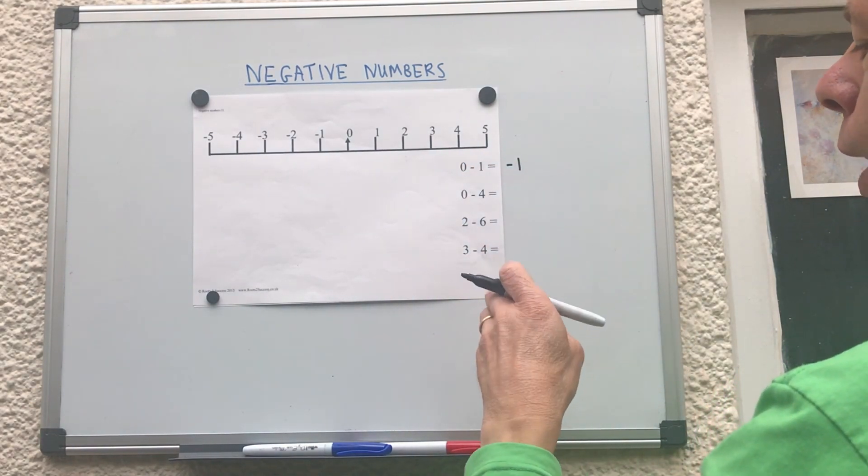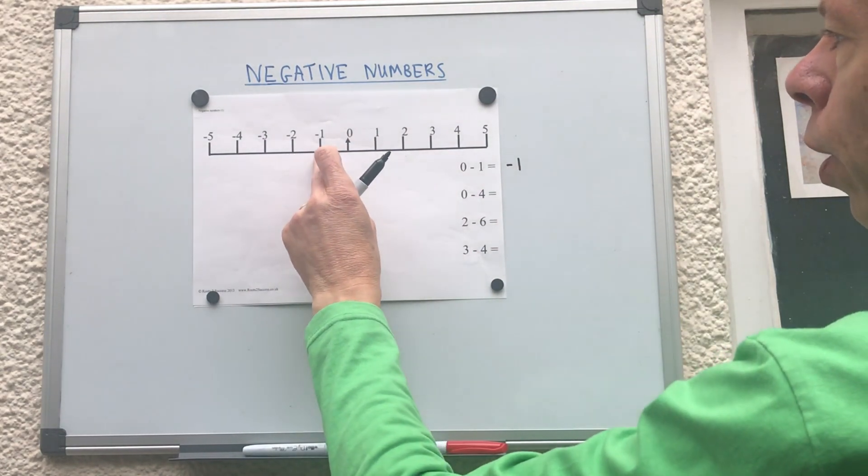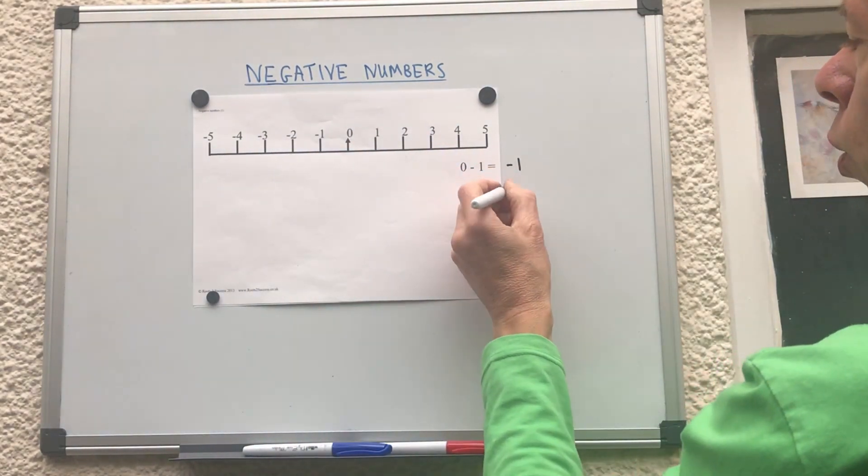If we're trying to work out zero take away four, start at zero, go back four steps, one, two, three, four, minus four.